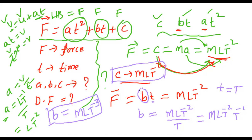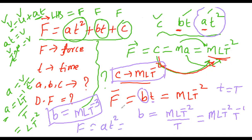If you understand C and B perfectly, show me how to calculate A. F = AT², which equals MLT⁻². Please find the dimensional formula of A.